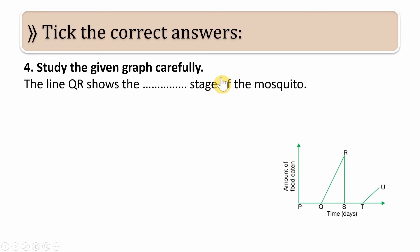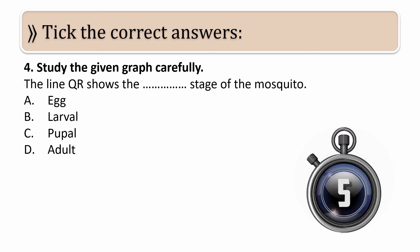Next question: Study the given graph carefully. The line QR shows which stage of the mosquito? QR is the first stage. What are the options? Egg, larval, pupal, adult. What do you think is the correct answer? Your time starts now.